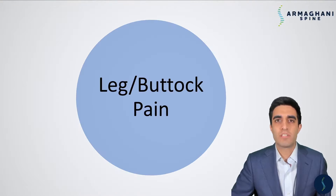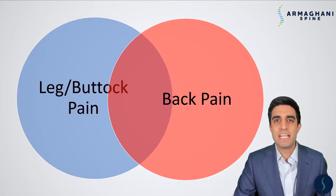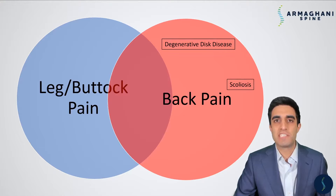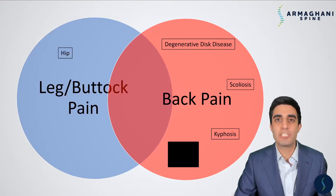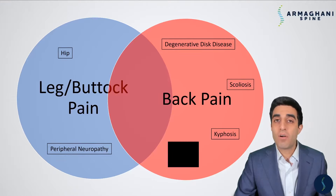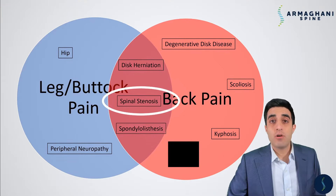When surgeons are trying to think about the different causes of a patient's particular issue, we try to think of the location in which it occurs. Patients can have discomfort or pain in their leg or buttock area, just their back, or sometimes a combination of both. Conditions that can cause purely back pain include degenerative disc disease, scoliosis, and kyphosis, as well as unknown causes such as muscle imbalances or arthritis of the joints. Conditions causing purely leg and buttock pain can involve hip arthritis or peripheral neuropathies. But some conditions cause both back and leg pain — those include spinal stenosis, lumbar spondylolisthesis, and disc herniations. Today we'll be discussing spinal stenosis.